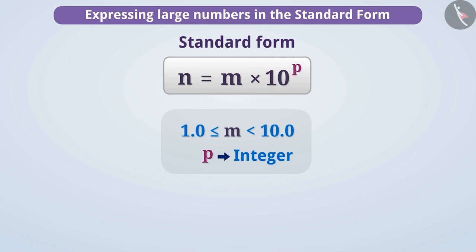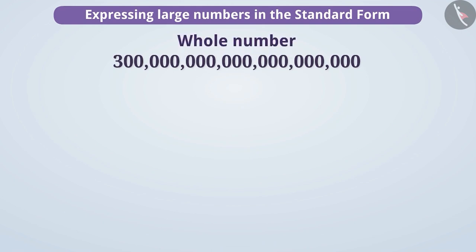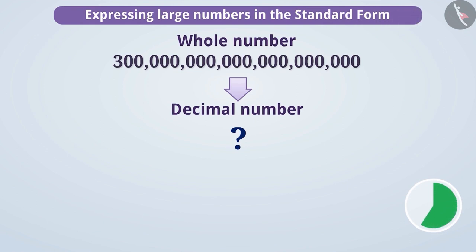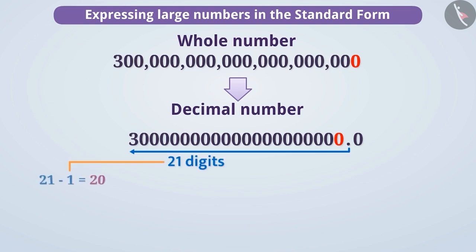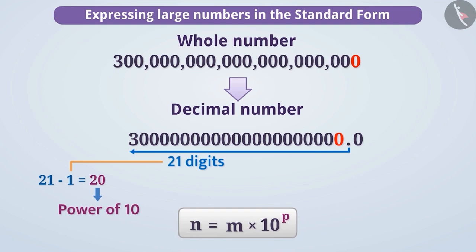Let's understand this in detail. Let us consider this figure — a whole number. First, we will convert this into its decimal form by placing a decimal point after the last digit of the whole number and writing 0 after it. Next, we will count the number of digits to the left of the decimal point. There are a total of 21 digits to the left of the decimal point. If we subtract 1 from this, we get the exponent of 10 in the standard form — the value of p. By subtracting 1 from 21, we get the value of p to be 20.